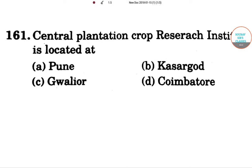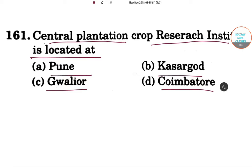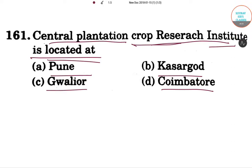Hello students, welcome to Short Sir Classes. Today our question is about the Central Plantation Crop Research Institute and where it is located. We have options: Pune, Kasargod, Gwalior, and Coimbatore. So again, the question: Central Plantation Crop Research Institute is located in which of the following?